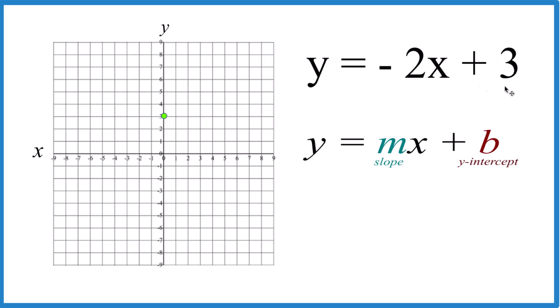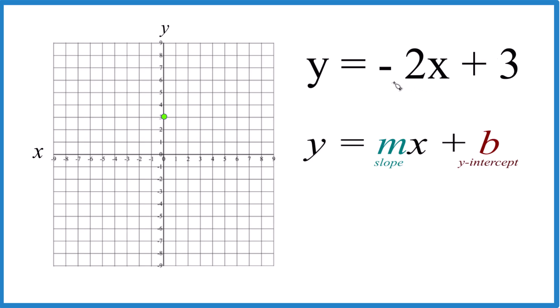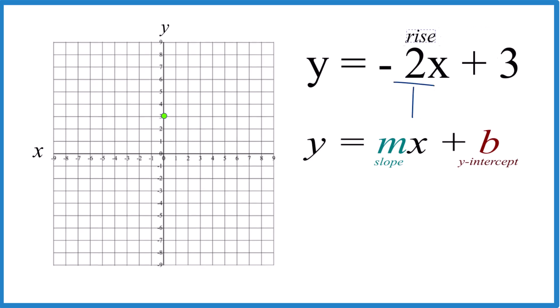For the slope, m, we have 2, but let's call it 2 over 1, because that way we can call this rise over run. So we'll go back to our y-intercept here, and we'd rise 2, except we have a negative sign here, so we do need to go down 2 over 1.